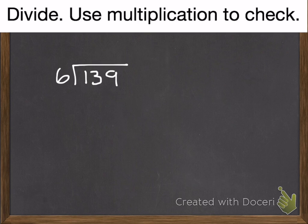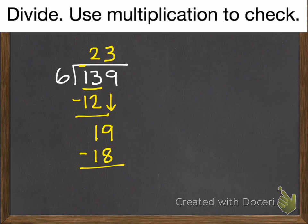6 can't go into 1. So we'll have it go into 13. There are 2 6s in 13. So that gives out 12. This leaves us with 1. Bring down the 9. How many 6s are in 19? There are 3. 3 times 6 is 18.